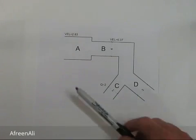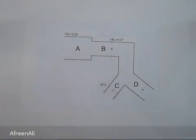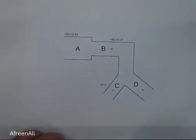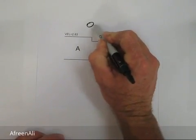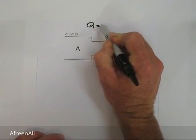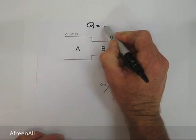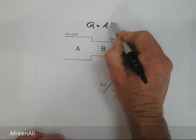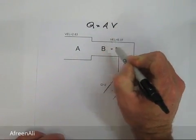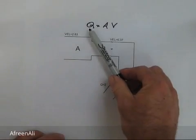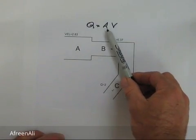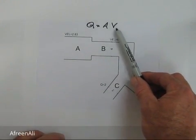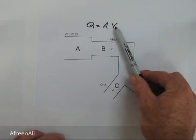The flow rate is calculated using the formula Q equals A times V, where Q is the flow rate, A is the cross-sectional area of the pipe, and V is the velocity of the fluid in the pipe.